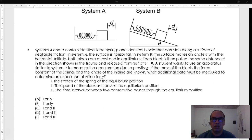A student wants to use an apparatus similar to system B to measure the acceleration due to gravity g. If the mass of the block, the force constant of the spring, and the angle of the incline are known, what additional data must be measured to determine an experimental value for g?